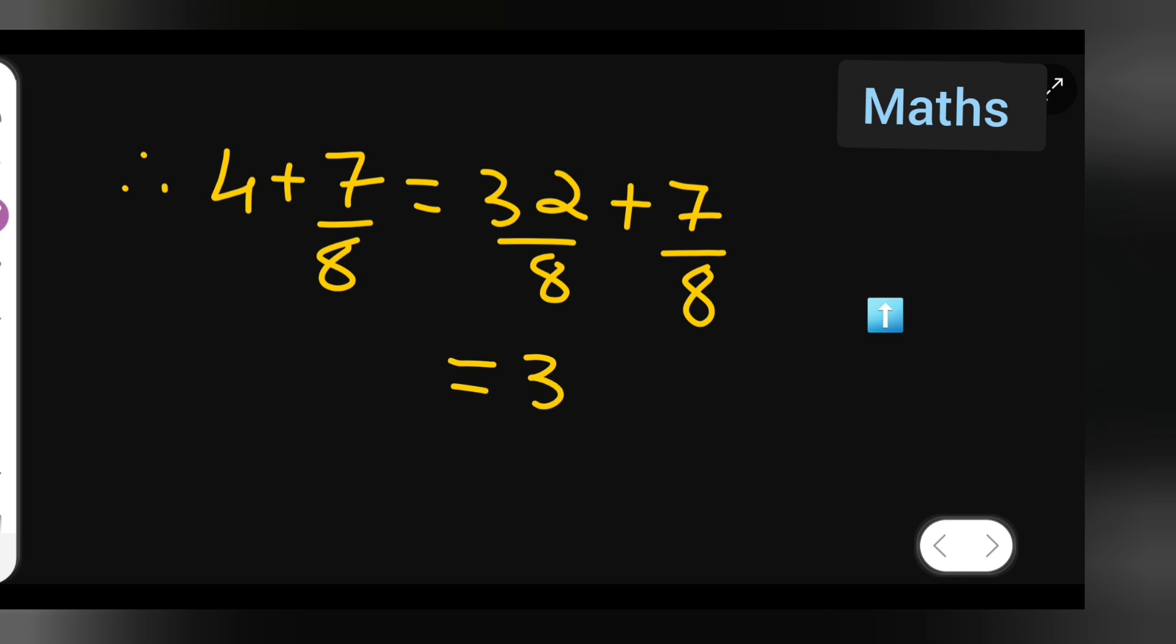I am going step by step. 32 plus 7 upon 8. Now this is equal to, now add this 32 plus 7, you will get 39 upon 8. So write down 39 upon 8 is your answer.